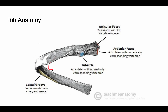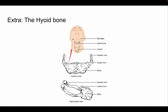One more thing regarding the axial skeleton: the hyoid bone. It is found suspended right above the larynx and forms the base of the mouth — it's the base of your tongue and is involved in swallowing. The hyoid bone has three parts: the greater horn, the lesser horn, and the body of the hyoid.